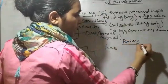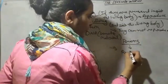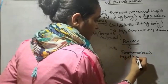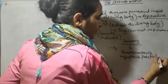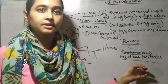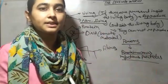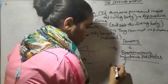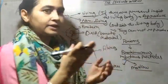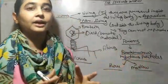Another example is prions — proteinaceous infectious particles. They have no genetic material but they can cause disease. They are not living, but they can cause diseases like Kuru and mad cow. Prions are neurodegenerative disease agents.